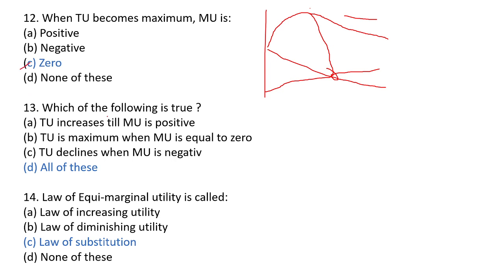Next question: which of the following is true? First: total utility increases till marginal utility is positive — yes, when total utility is increasing, marginal utility decreases but remains positive. Second: total utility is maximum when marginal utility equals zero — this is true. Third: total utility declines when marginal utility is negative — this is also true. So the answer is all of these.